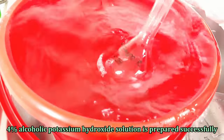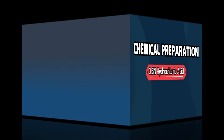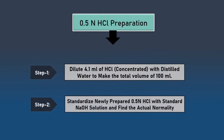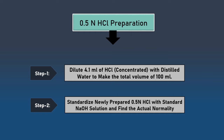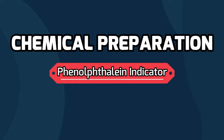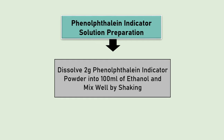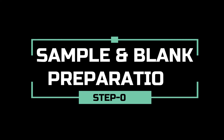4% alcoholic potassium hydroxide solution is prepared successfully. For the preparation of 0.5 normal hydrochloric acid, dilute 4.1 ml concentrated hydrochloric acid in distilled water to make a final volume of 100 ml. Standardize the solution using a standard sodium hydroxide solution. For the preparation of phenolphthalein indicator solution, dissolve 2 grams phenolphthalein powder into 100 ml ethanol and mix to dissolve.